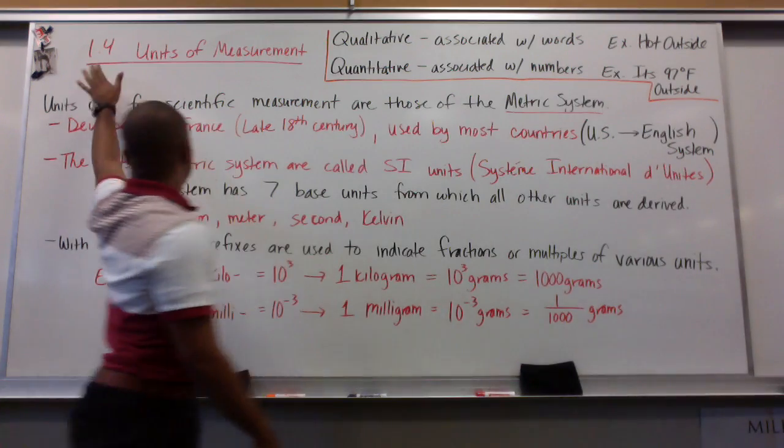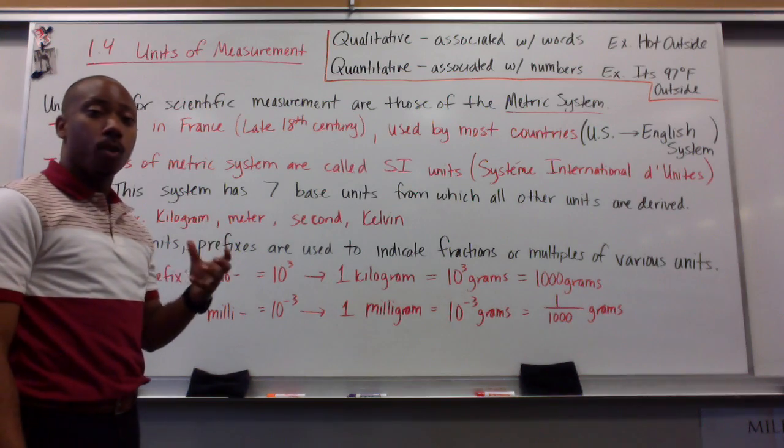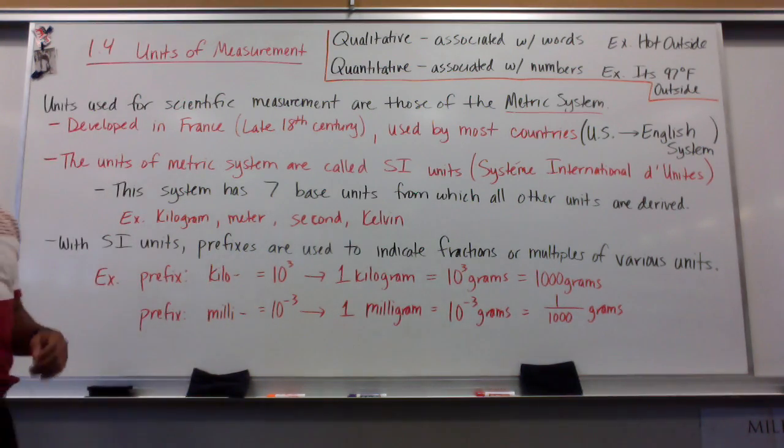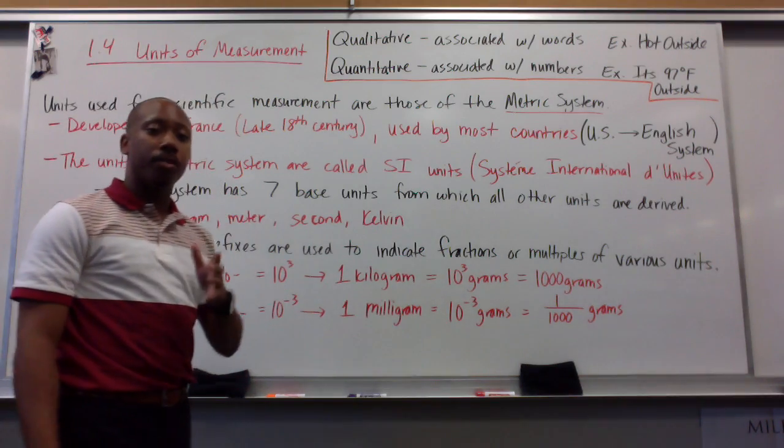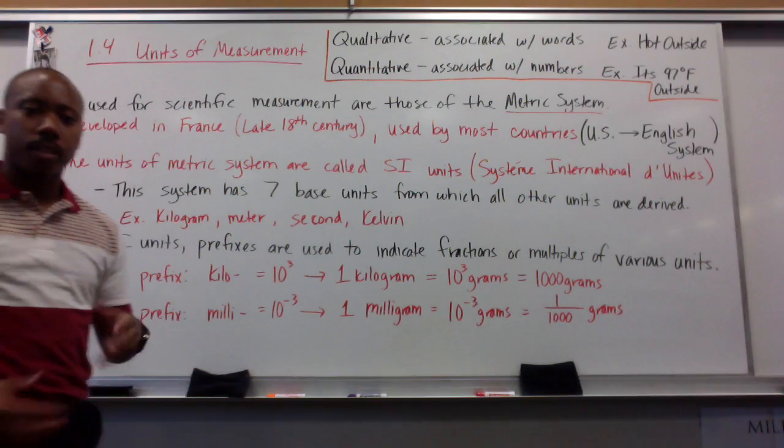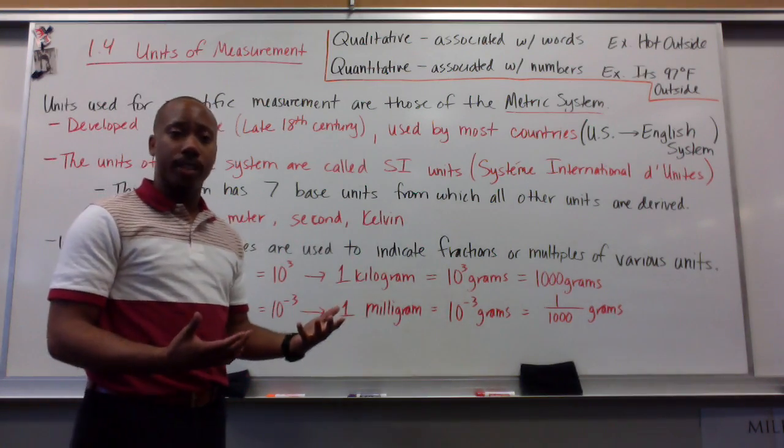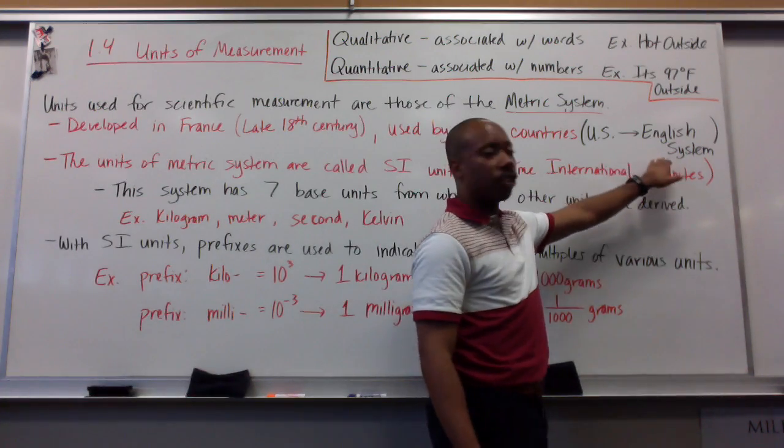Now, we're going to start talking about units of measurement. This is our section four of chapter one. The units used for scientific measurement are those of the metric system. For science, we use the metric system. This was developed in France in the late 18th century and is used by most countries. In the United States, however, we use mostly the English system.